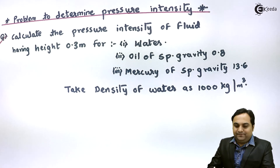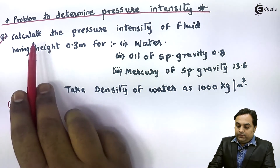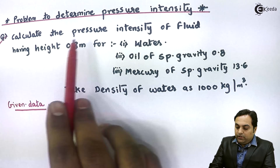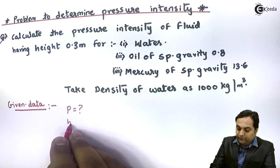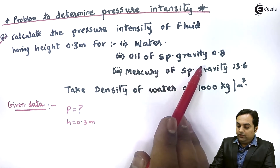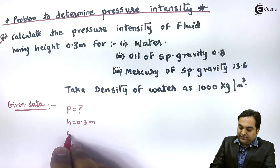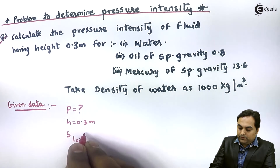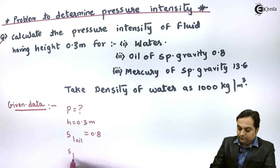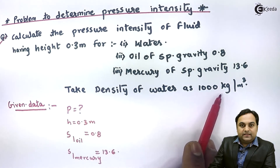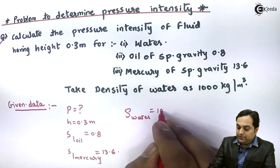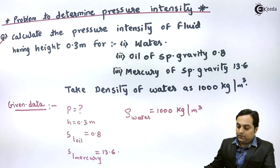We have to calculate the pressure intensity, denoted by P, of a fluid having height 0.3 meters. For oil, specific gravity S is 0.8, and for mercury, specific gravity is 13.6. The density, denoted by rho, for water is 1000 kg per meter cube.